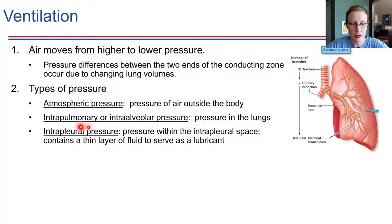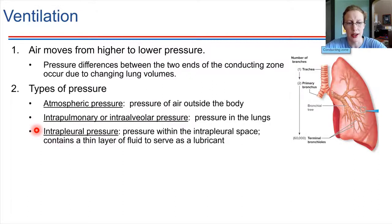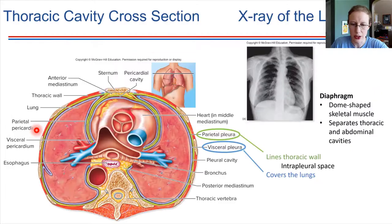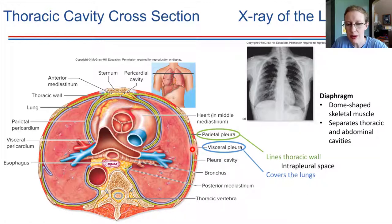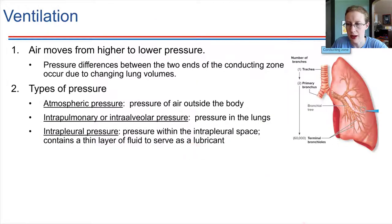We also have intrapleural pressure — the pressure between those two pleural membranes. There is actually pressure right there between those two pleura, and this is really key for keeping the lungs inflated and keeping them from collapsing. We'll see that again in just a minute.